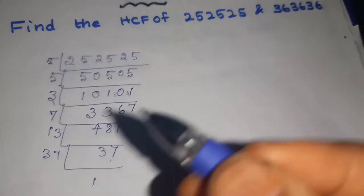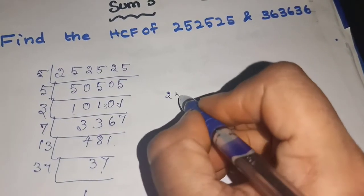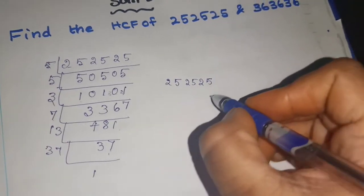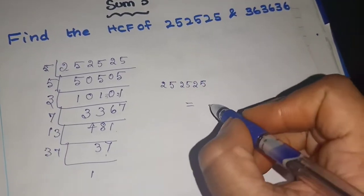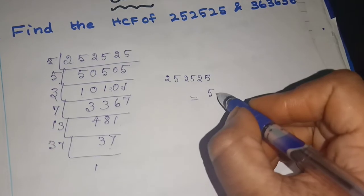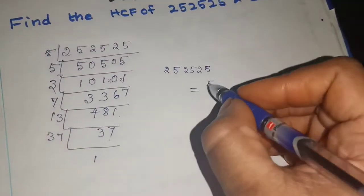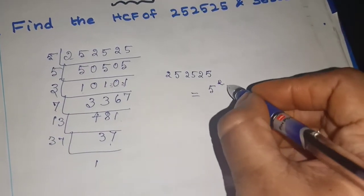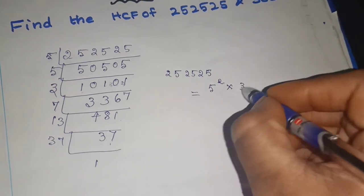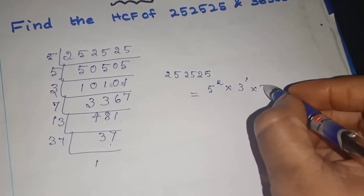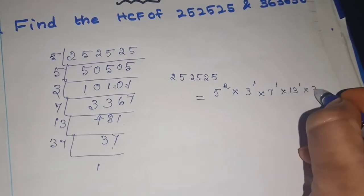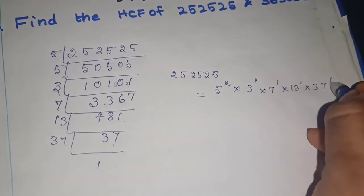So how will you write it? You can write 252525 as prime factors in powers equal to: how many 5s are coming? 5 into 5, so 5 squared, that is 5 to the power 2. Next, 3 is only 1, so 3 to the power 1. Next, 7 is also 1, so 7 to the power 1. Then 13 to the power 1 into 37 to the power 1.